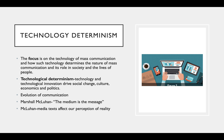Technological determinism focuses on the technology of mass communication, its nature, its role in society, and in people's lives — looking at technological innovation, social change, culture, and economics. It connects to the evolution of communication covered earlier in Learning Unit 2. Marshall McLuhan argued that watching TV and listening to radio affects your perception of reality. He distinguished hot media, such as film, which gives us everything and leaves little to the imagination, from cool media, which allows us to participate by filling in the missing data. This changed the way we see things through media and affects our perception of reality.